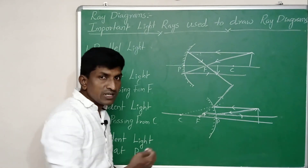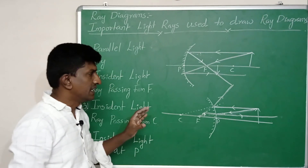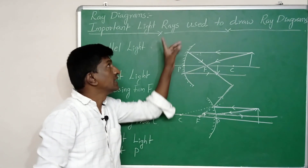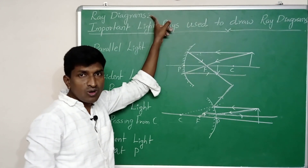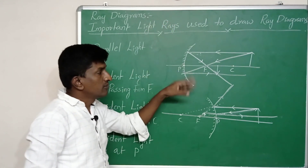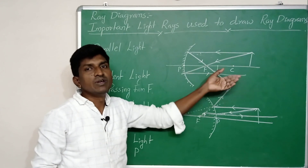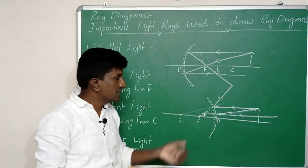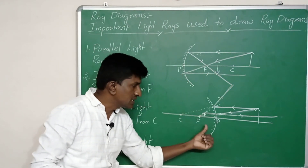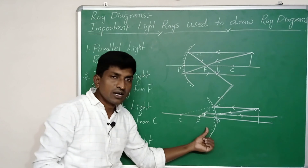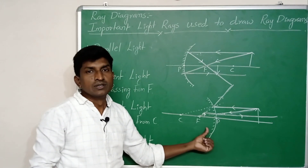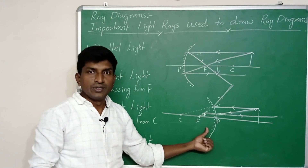In the next class, we will discuss clearly how ray diagrams are drawn when the object is placed at various distances from the concave mirror as well as the convex mirror. Thank you.